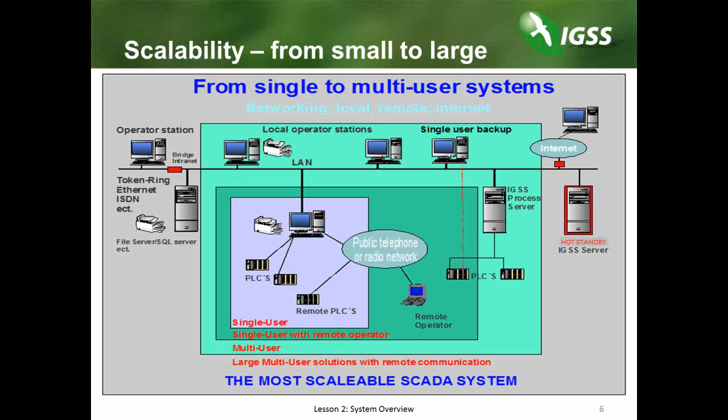Scalability from small to large. I'd like to explain a little bit about the scalability in IGSS, going from small scale to large scale operations. Looking at the slide, we can see how we start small and grow larger, adding more operators, servers, and connection options. In the middle we have a single user system — the smallest system available in the IGSS software package — with a server and a monitoring process located on one and the same PC. The PLCs are connected to the one PC, which is both server and monitoring station. We can add to the single user system and connect a remote operator, perhaps connecting through a public telephone or radio network.